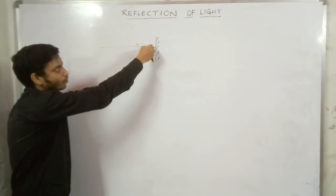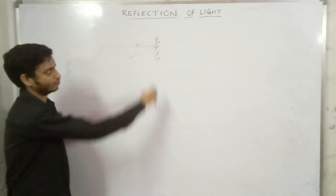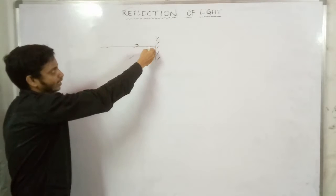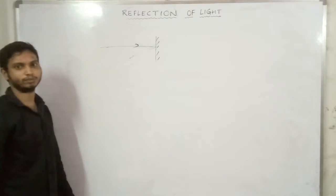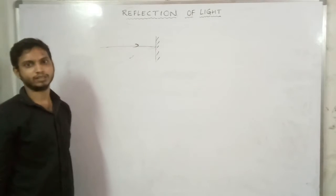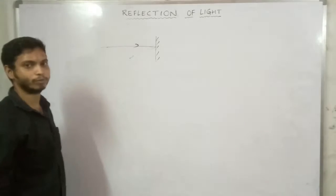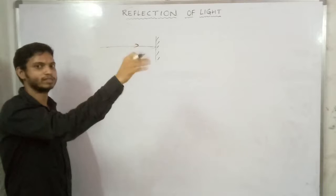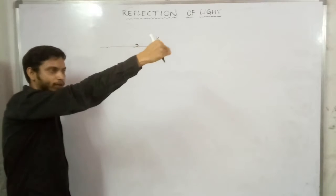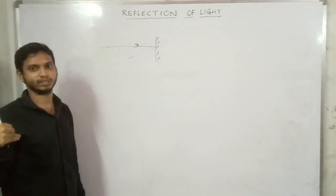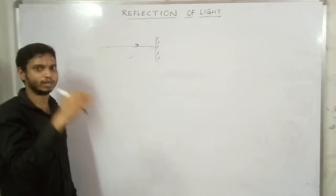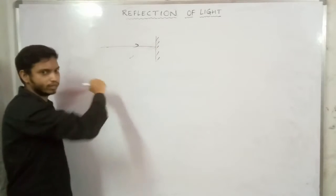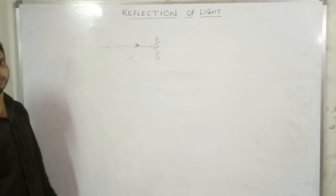Getting back the light when it falls on the surface — the light is incident, then the light returns. That process is called reflection of light. For example, if you throw a rubber ball, it will bounce back. Similarly, the light incident on a surface will return. That is reflection of light.